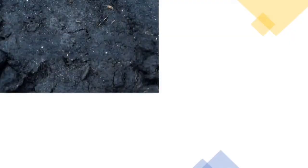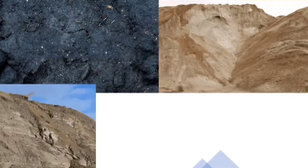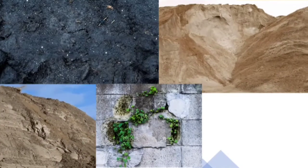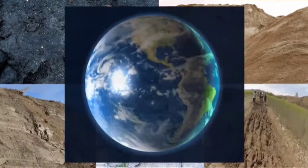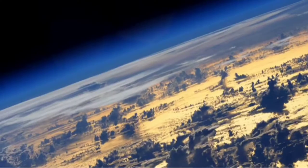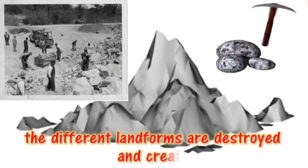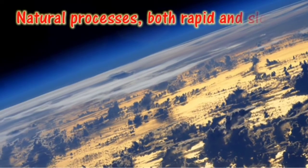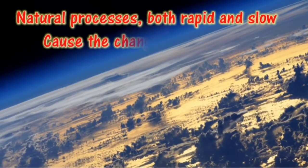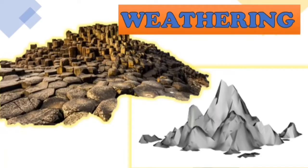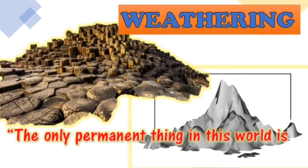Breaking of rocks, shifting sand dunes, eroding hillsides, weeds growing on cemented walls and playground, and muddy water running in gutters are all evidence that Earth's surface is changing. For over several millions of years, the different landforms are destroyed and created. Natural processes, both rapid and slow, cause the changes that happen to Earth's surface. And one of them is weathering, as shown in the pictures. As the saying goes, the only permanent thing in this world is change.